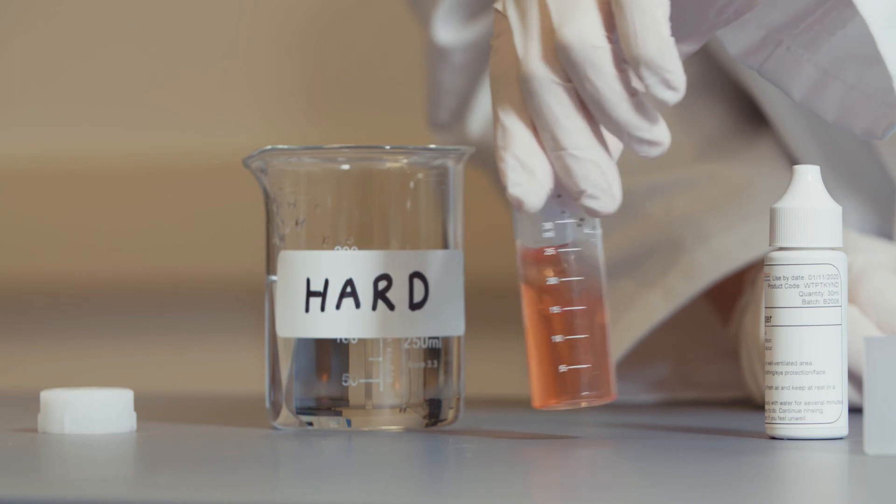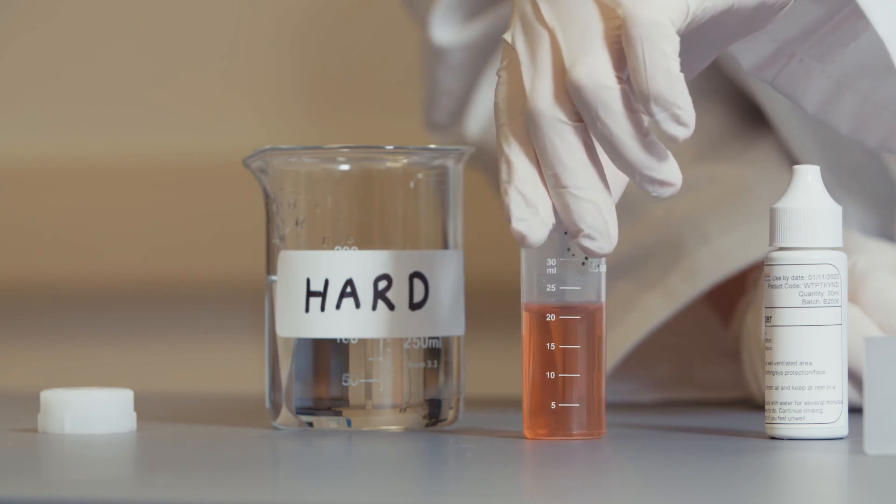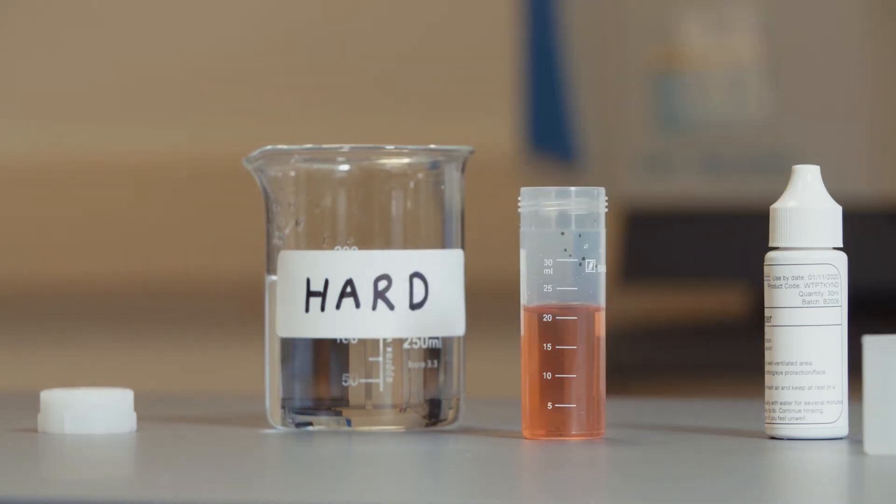Swirl the sample pot to mix the indicator thoroughly. A red color indicates the sample's hardness is 10 ppm or greater.